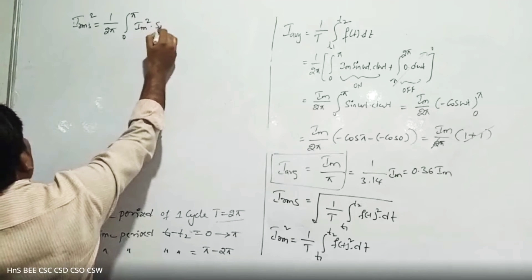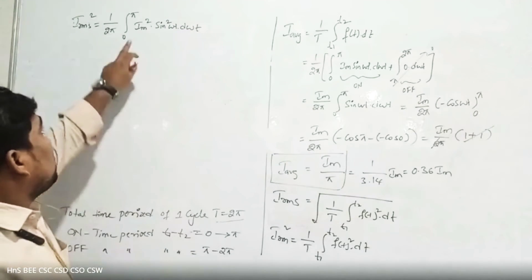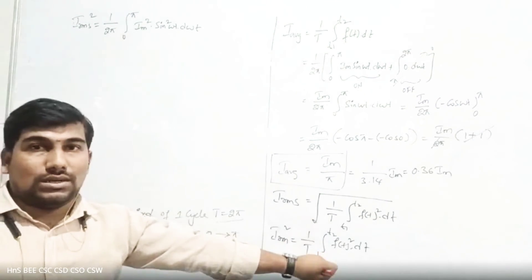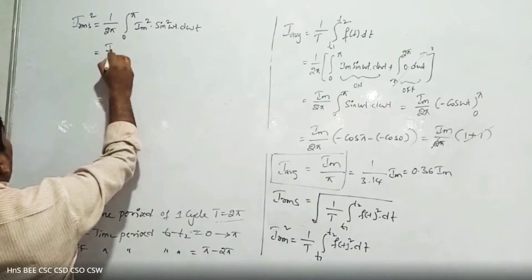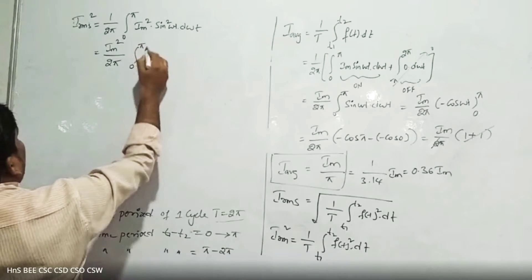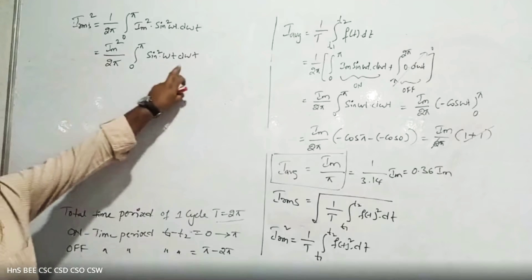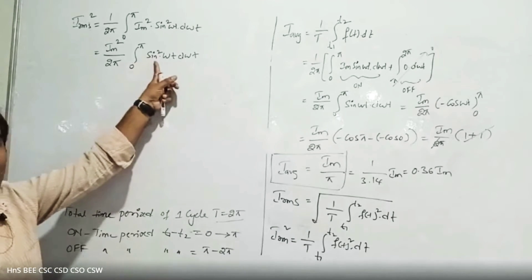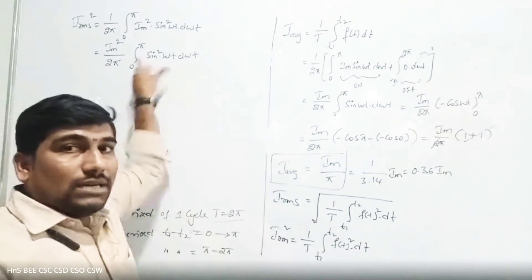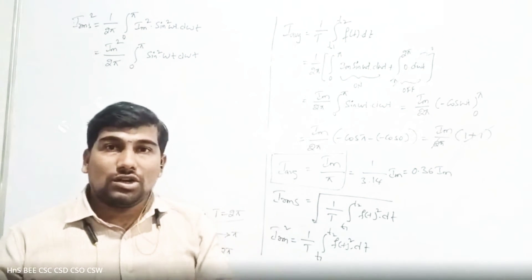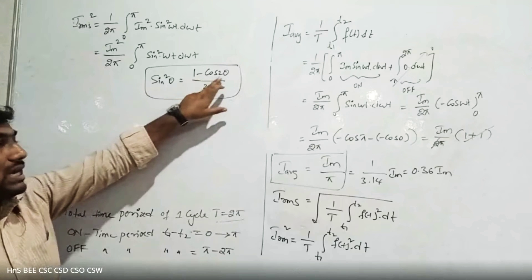What is [f(t)]²? It is Im² × sin²(ωt). So we have I_rms² = one by 2π, integration of 0 to π of Im² sin²(ωt) d(ωt). Since Im² is constant, it comes out of the integration. We now need to integrate sin²(ωt). We don't have a direct formula for integration of sin², so we convert it using the trigonometric identity: sin²θ = (1 − cos 2θ) / 2.